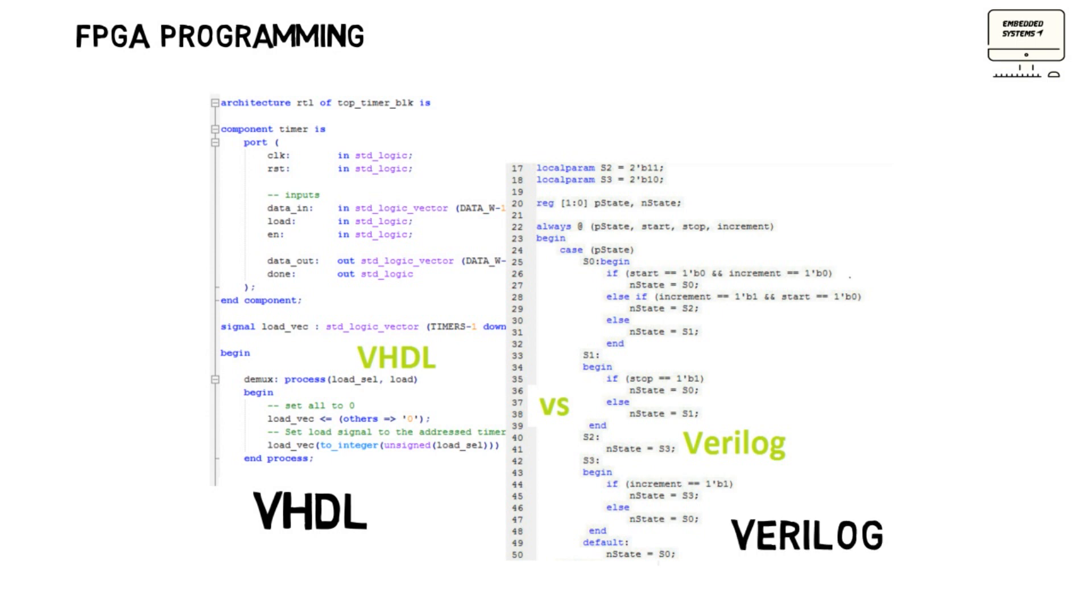There are two hardware description languages that are typically used to program FPGA designs. Verilog is a combination of verification and logic, a language based on C programming language that is primarily used for designing and verification of digital and analog circuits.